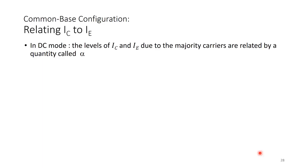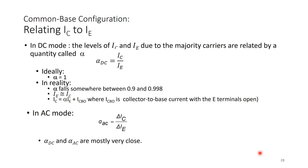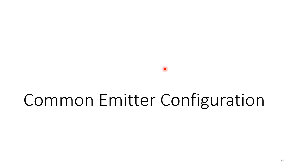Still on common base configuration: the DC levels of IC and IE due to majority carriers are related by a quantity called alpha (α) — the common base DC current gain. Alpha = IC / IE. Ideally IC ≈ IE so alpha ≈ 1; in reality alpha falls between 0.9 and 0.998. In AC mode, alpha AC considers the changes of IC with respect to changes in IE, and alpha DC and alpha AC are mostly very close. The key result is: IC = α × IE. Next we will look at common emitter configuration.